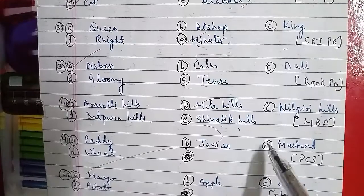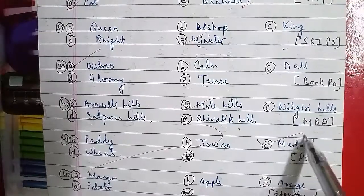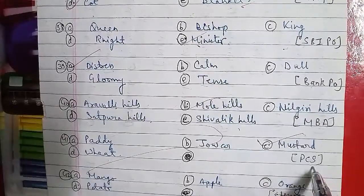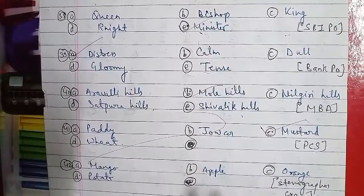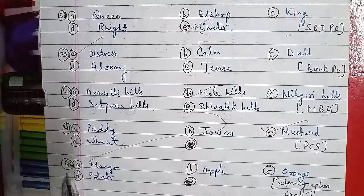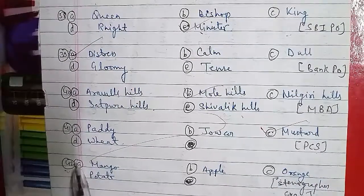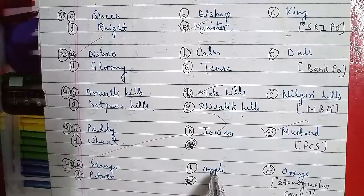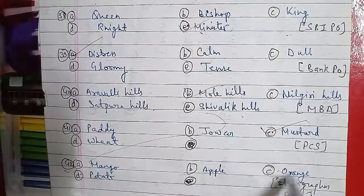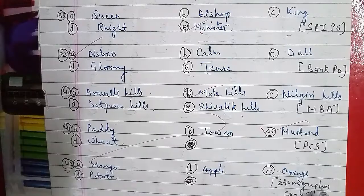Question number 42: Option A is Mango, B is Apple, C is Orange, and D is Potato. Mango, Apple, and Orange are all fruits. Potato is not a fruit. So the answer is Potato.